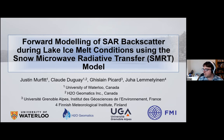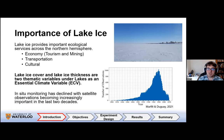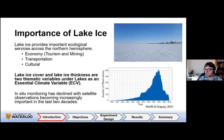I'd like to thank all my co-authors from Canada, France, and Finland on this work. Lake ice provides important ecological services across the northern hemisphere, ranging from the economy, tourism and mining, transportation, and cultural uses. Additionally, lake ice cover and lake ice thickness are two thematic variables as part of the essential climate variables.